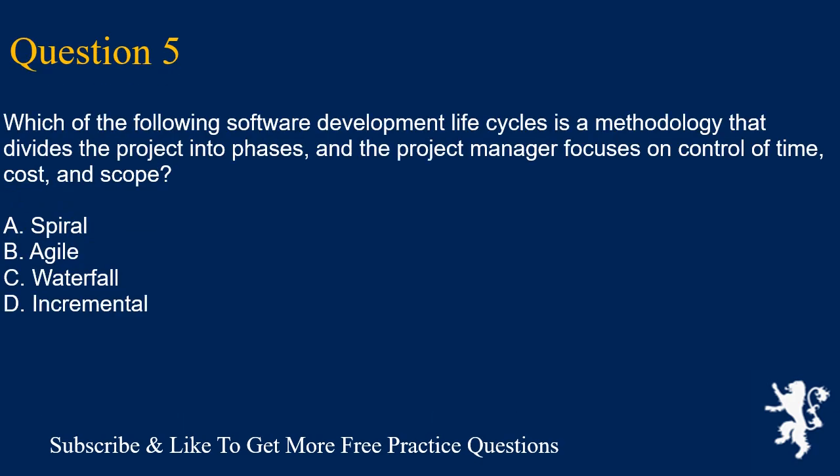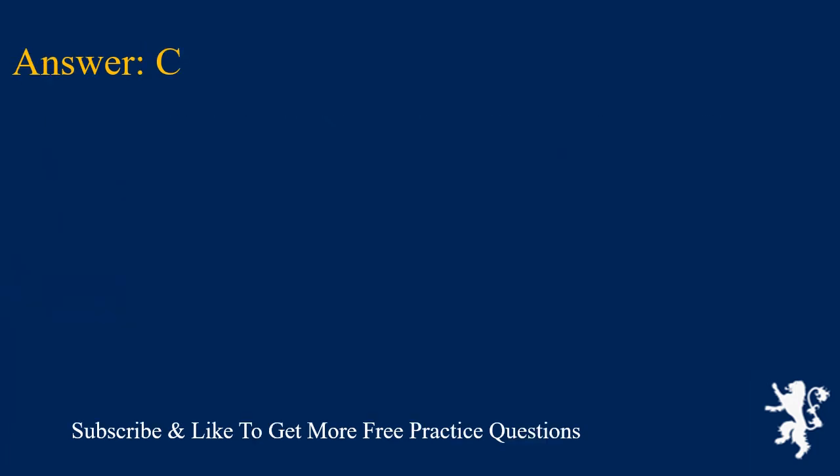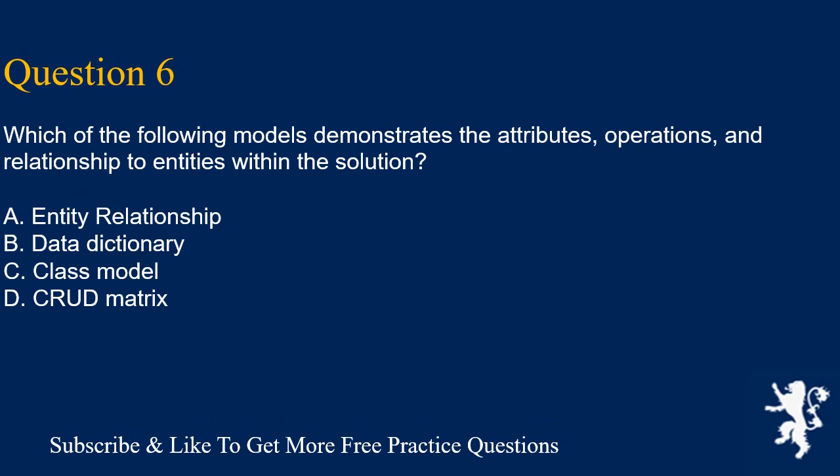Question 5: Which of the following software development life cycles is a methodology that divides the project into phases and the project manager focuses on control of time, cost, and scope? A. Spiral. B. Agile. C. Waterfall. D. Incremental. Answer is C. Waterfall.